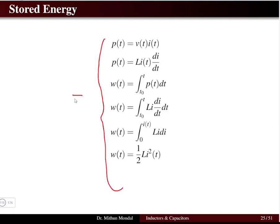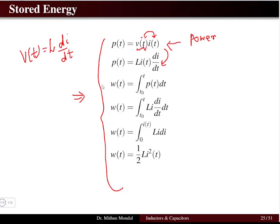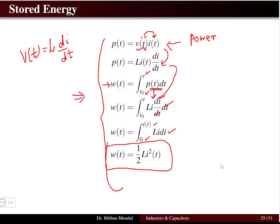We will now discuss stored energy, similar to the derivation done for capacitors. Power is the product of voltage and current: p(t) = v(t) × i(t). Substituting v(t) = L di/dt into the power equation, and integrating power from t₀ to t to get energy, we obtain: W = ∫L i (di/dt) dt = ½ L i².